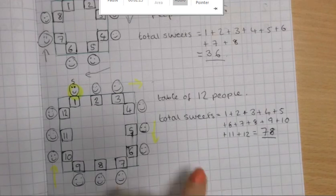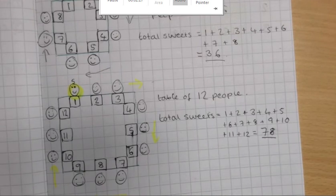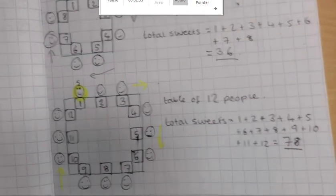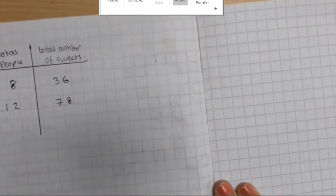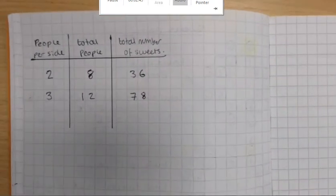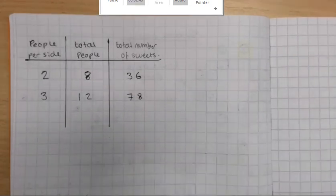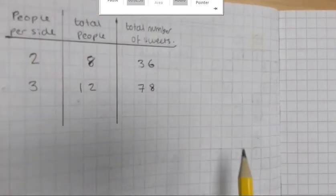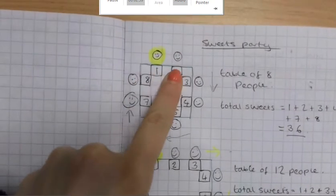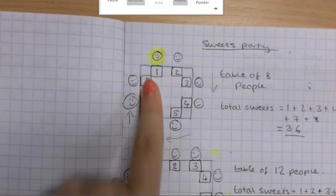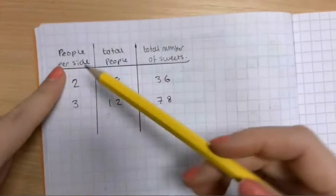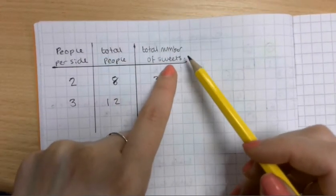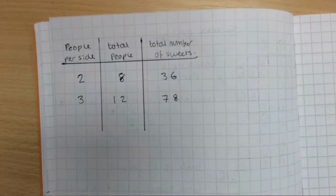And some of you might have drawn even bigger tables again. And some of you haven't. And that's okay. So at the very end of our session, we were talking about how to record our results, and we thought it would be good if we put it in a table. So what I want you to do today is to start with, make sure you have this table written down. And we've got the first column, people per side, and that is people per side of the table. So there are two people on this side. Two, two, two. So people per side. And we've got the total number of people at the table. And then the total number of sweets.